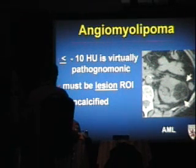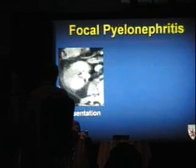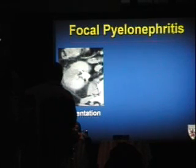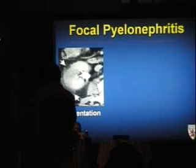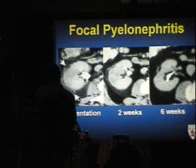Inflammatory lesions — pyelonephritis, abscess, trauma-induced hematomas, vascular infarcts — can all masquerade as masses. The signs of inflammatory lesions are perinephric changes: thickened Gerota's fascia, stranding in the perinephric fat, ill-defined margins, and wedge-shaped morphology. Follow these out — at six weeks you'll see the pyelonephritic scar.